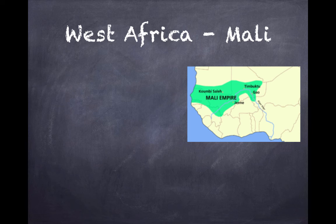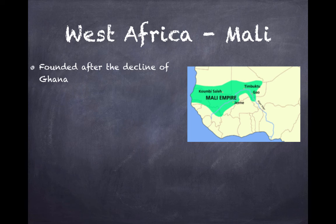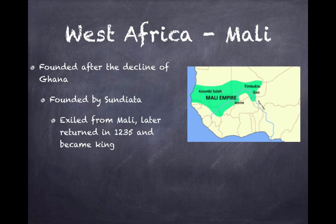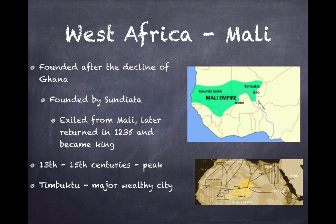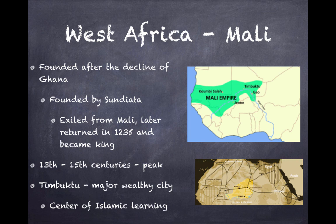Mali was founded after the decline of Ghana. The three major West African empires are Ghana, Mali, and then later Songhai. Mali was founded by Sundiata, who was exiled and later returned in 1235 and became king. From the 13th to 15th centuries, Mali was at its peak, and Timbuktu was a major wealthy trading city of the Mali Empire.